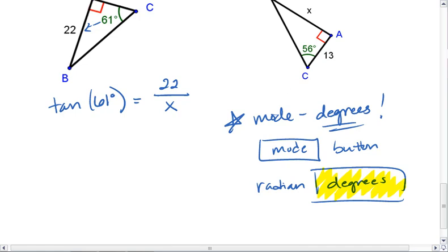If we're in degrees and we type in tan of 61, we should find approximately 1.804. So tan of 61 is 1.804. This equals 22 over x. We then can multiply both sides by x.